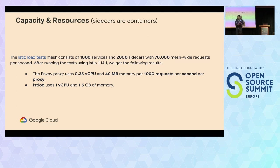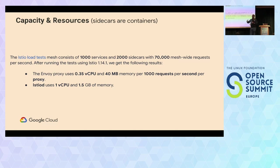Istiod, which is the control plane, consumes one vCPU and 1.5 gigabytes of memory per instance. It does auto-scale because it's stateless, so you can have multiple replicas if you have a big service mesh. Of course, the bigger the service mesh, the bigger your control plane is going to be.